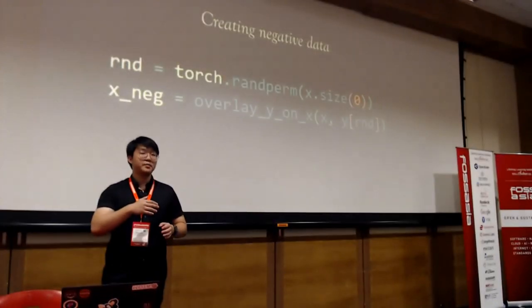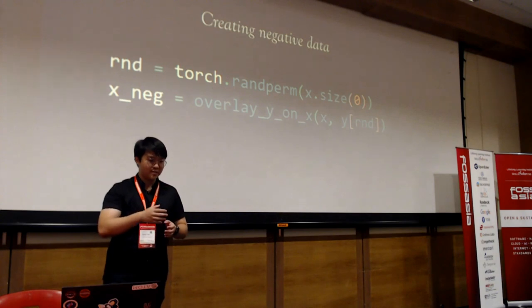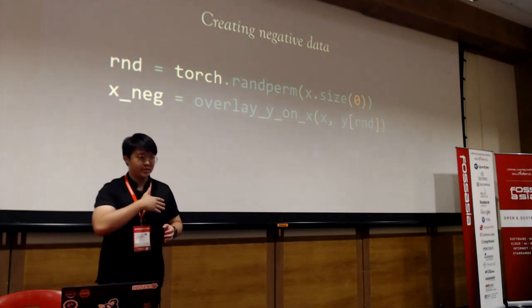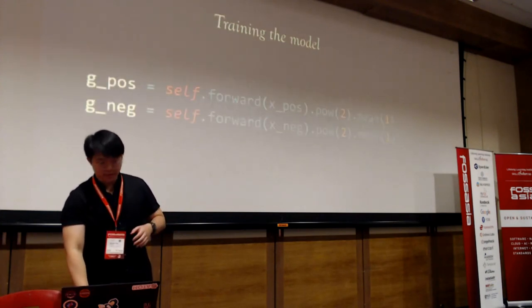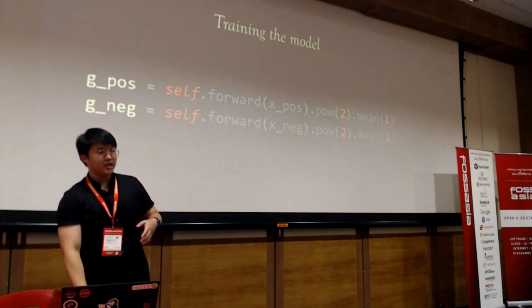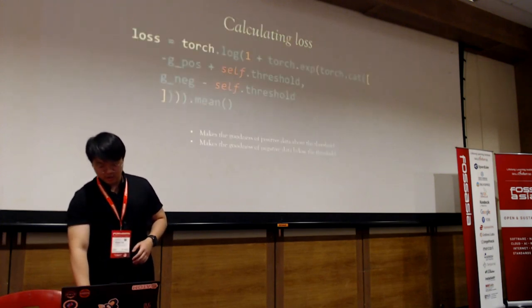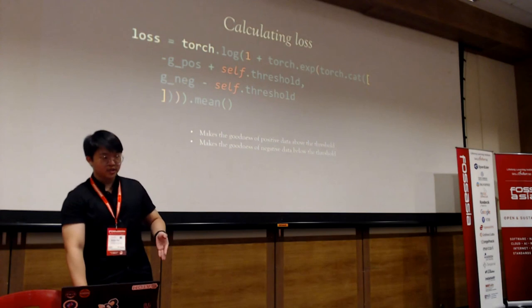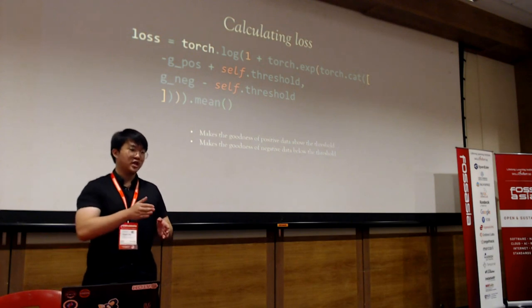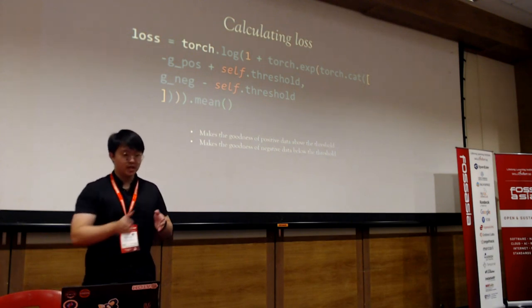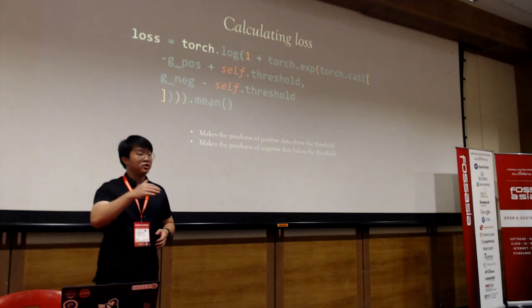For the Forward-Forward implementation, we first put labels with images, then create negative data by randomly permuting the labels — basically shuffling them and randomly assigning each image a wrong label. We then train the model, calculate the goodness value, calculate loss, and push the goodness of real data above the threshold and fake data below it.